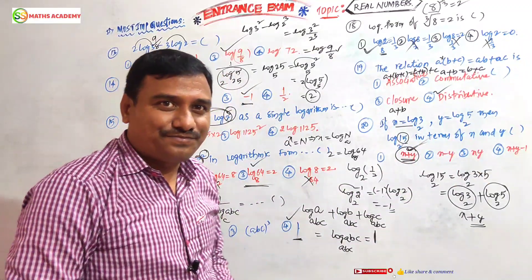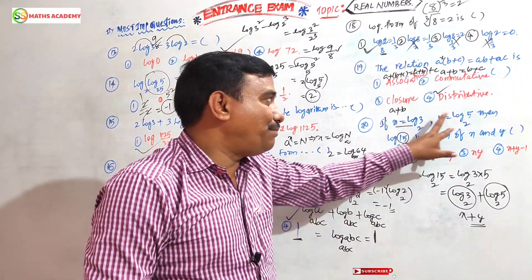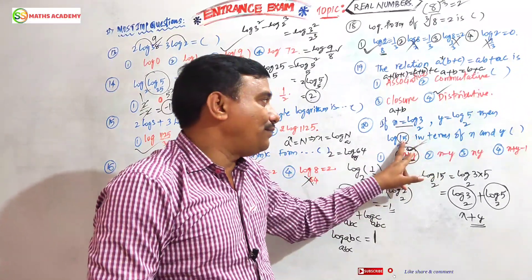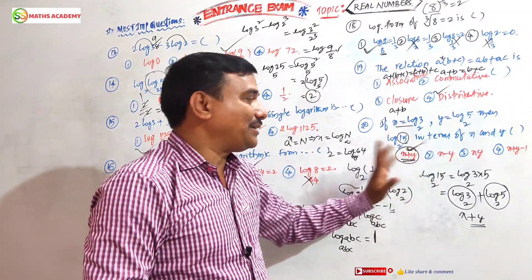Finish the answer. 3+5, 3+5, x+y. 3×5=15, right? So that is the reason x+y.